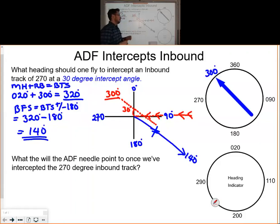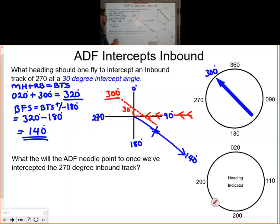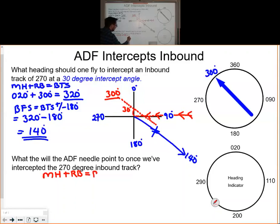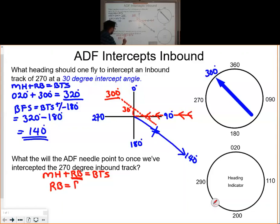Now, if you couldn't calculate that heading, you would not be able to calculate the second part of this question, which asks us to calculate what the ADF needle is pointing to once we've intercepted the 270 degree inbound track. We need to use the formula again. The magnetic heading plus the relative bearing equals the bearing to the station, but we need to calculate the relative bearing, so the formula is rearranged: relative bearing equals the bearing to the station minus your magnetic heading.